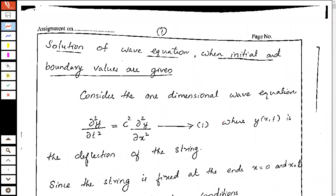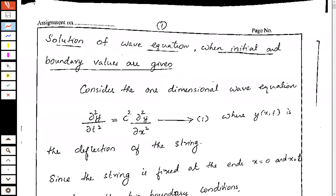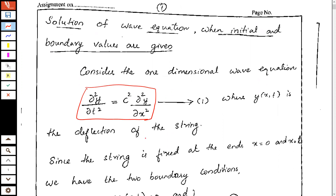Let us discuss the solution of the wave equation when initial and boundary conditions are given. We have the one-dimensional wave equation as ∂²y/∂t² = c² · ∂²y/∂x², where y(x,t) is the deflection of the string.